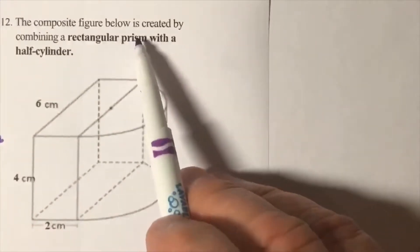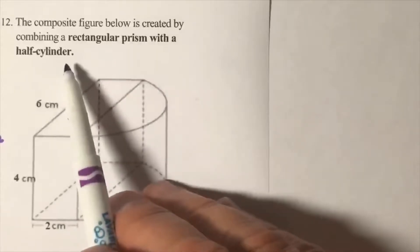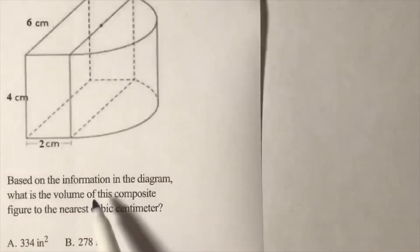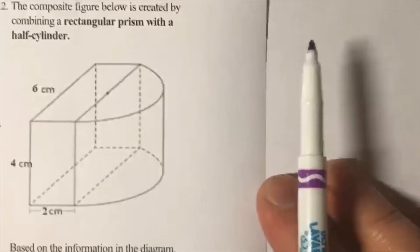The composite figure below is created by combining a rectangular prism with a half cylinder. Based on the information in the diagram, what is the volume of this composite?